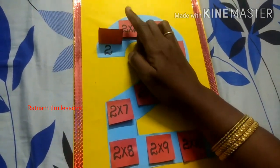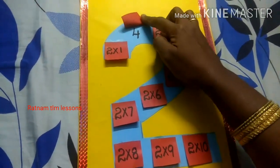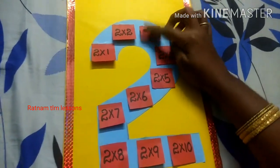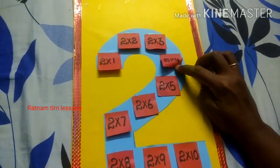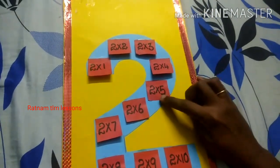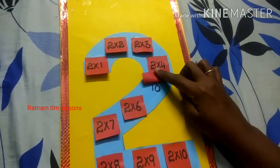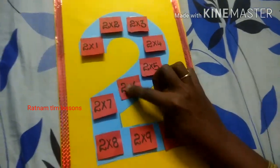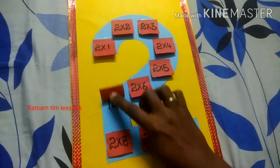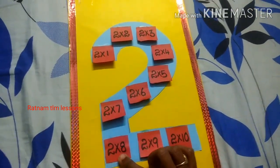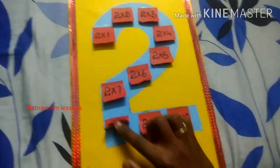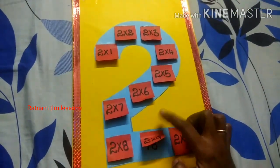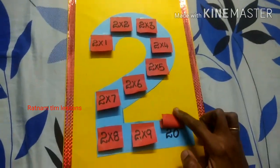To 1s are 2, to 2s are 4, to 3s are 6, to 4s are 8, to 5s are 10, to 6s are 12, to 7s are 14, to 8s are 16, to 9s are 18, to 10s are 20.